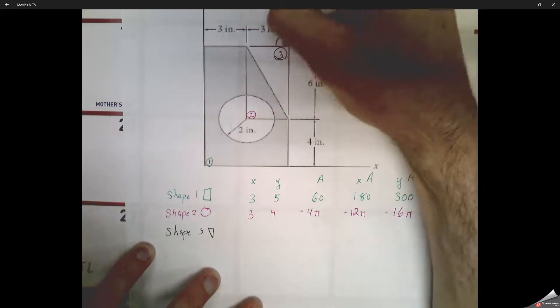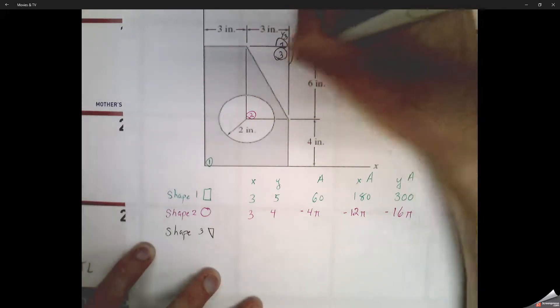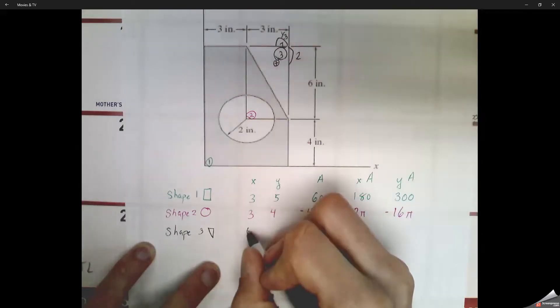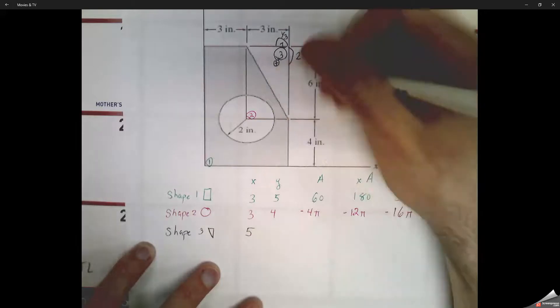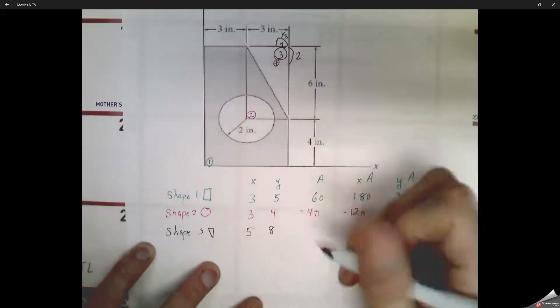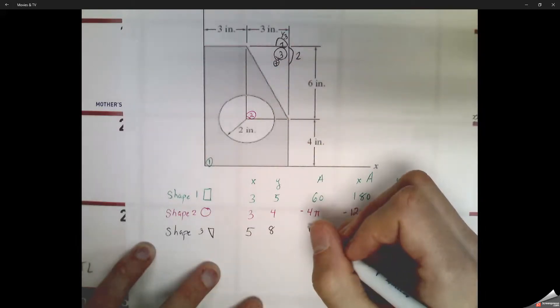Shape 3 is that triangle up on top. To find the centroid of a triangle, we take a third base, a third base, so a third of 3 is 1, a third of 6 is 2. And then we take that point and we base it off the origin of the bottom right. So to get to that point, we've got to go 5 right and then 8 up.